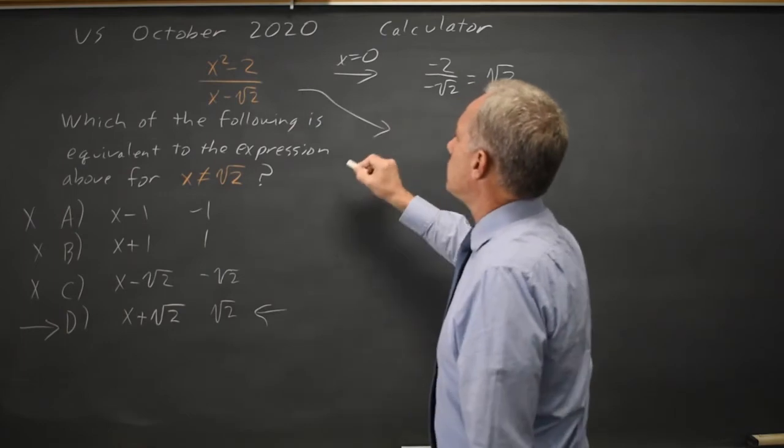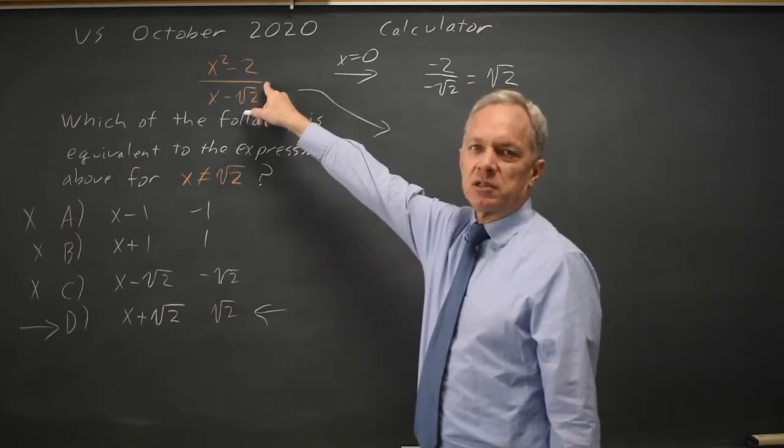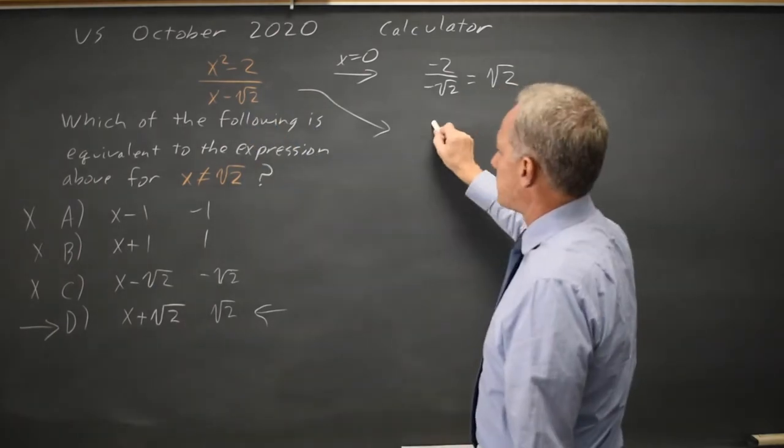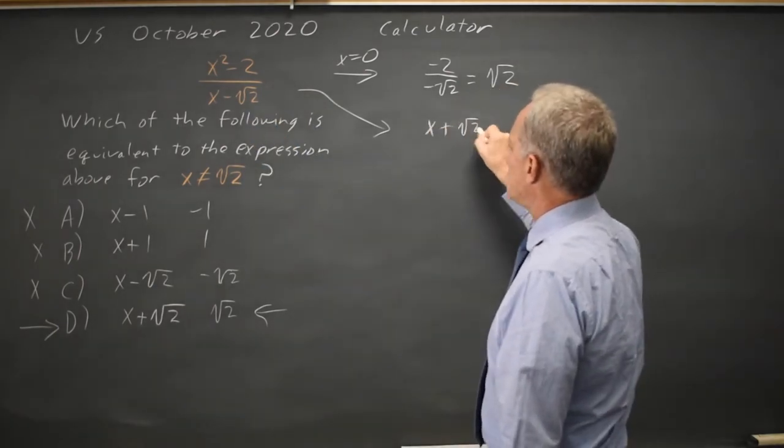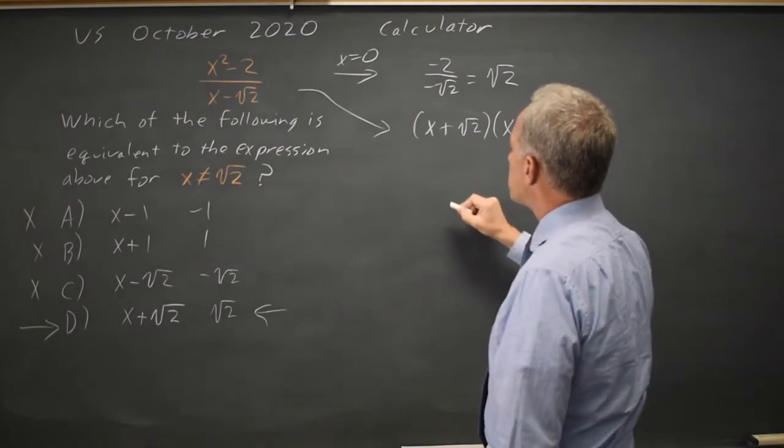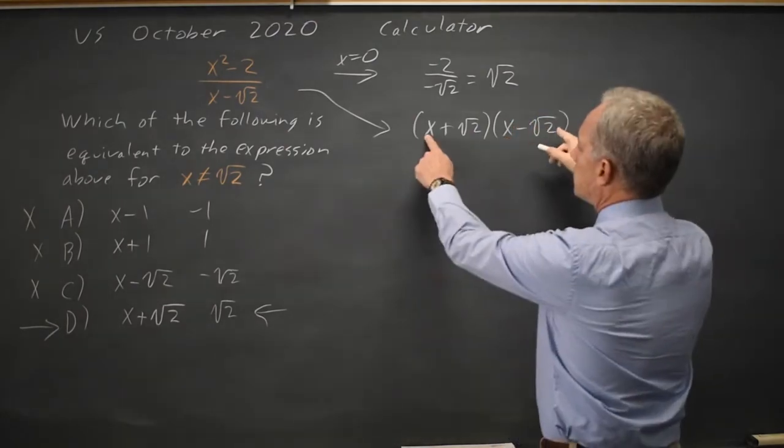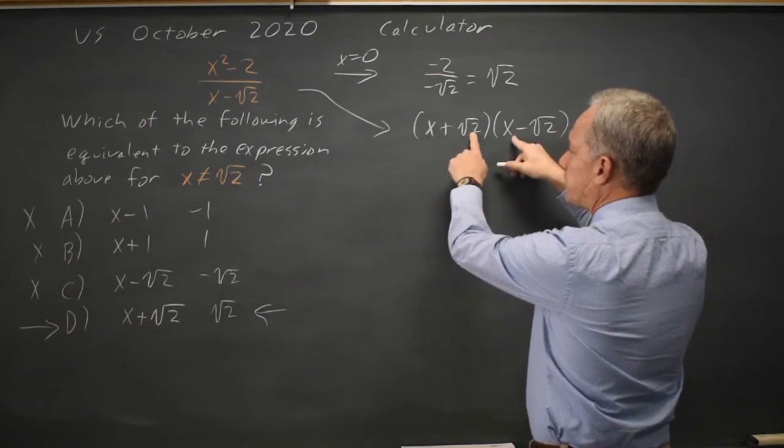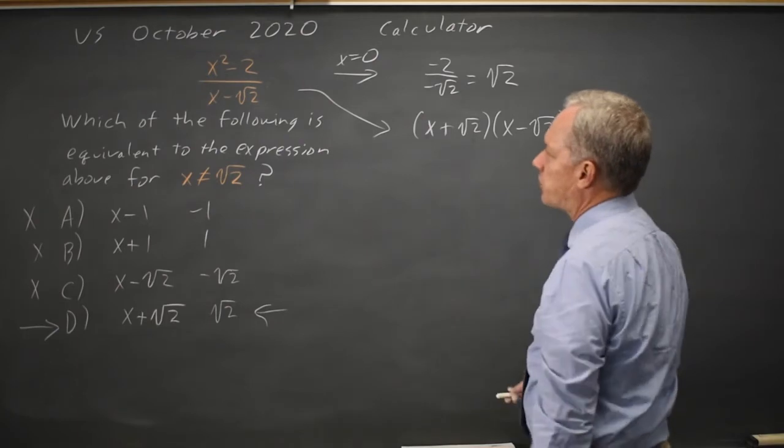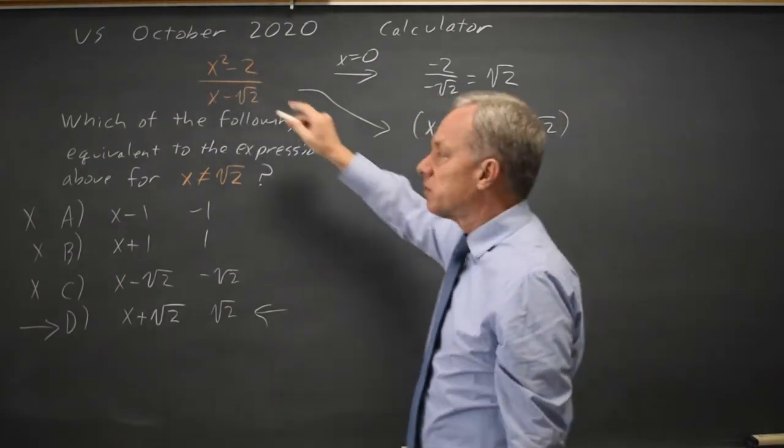Alternatively, you can recognize that the numerator is a perfect square, x squared minus a number. So you can factor it as x plus root 2, x minus root 2. And if you check with FOIL, that would be x squared minus root 2x plus root 2x. And those two terms cancel, and then minus 2. So it simplifies to x squared minus 2. That's the correct factorization.